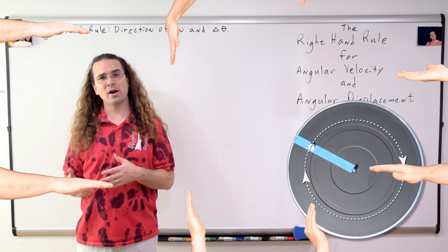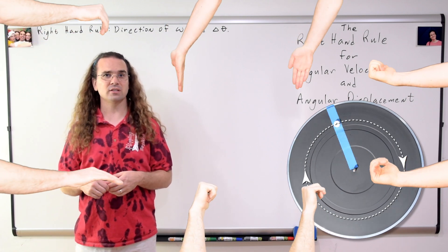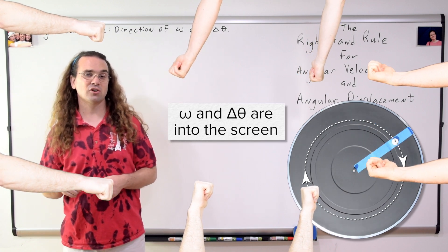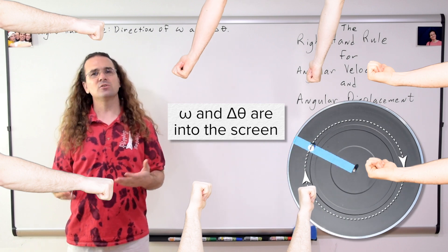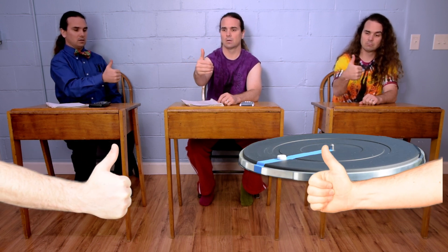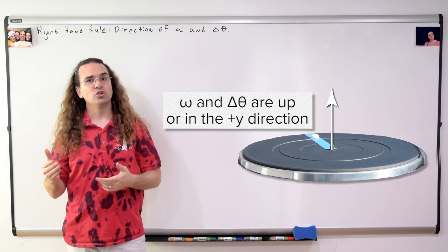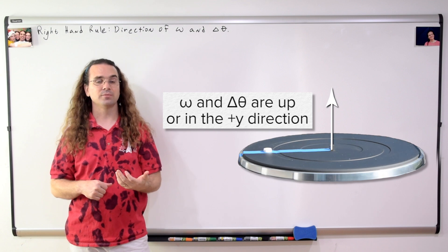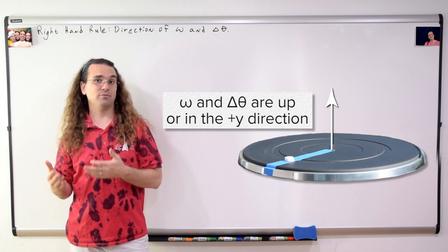Notice how no matter where you, the observer, are located for this example, using the right hand rule, you get that the turntable is turning into the screen. Now we are looking at the turntable from the side. Use the right hand rule — curl the fingers of your right hand in the direction the turntable is rotating. Which direction do we get? Up. Correct. You can see the mint and turntable have an upward angular direction, which is also the positive y direction.